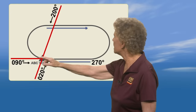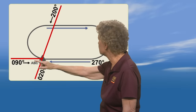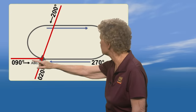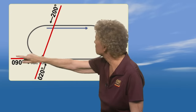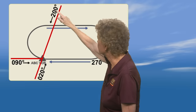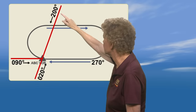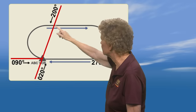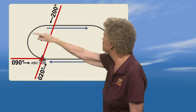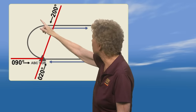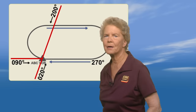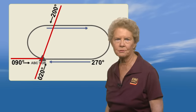From a heading of 090 degrees to the fix, clockwise around to 200 degrees to the fix, is the area for a parallel entry.